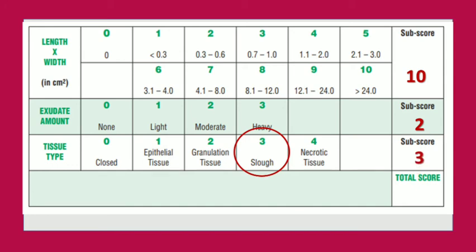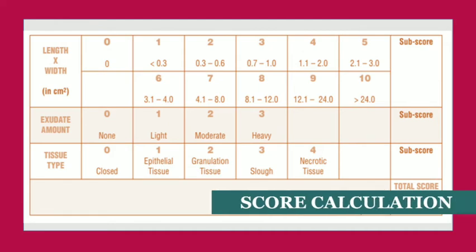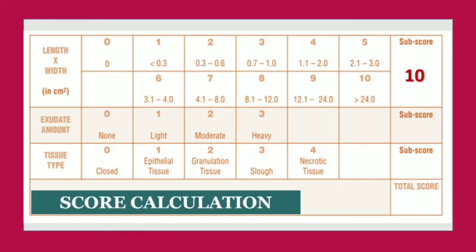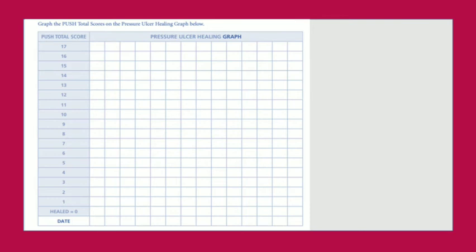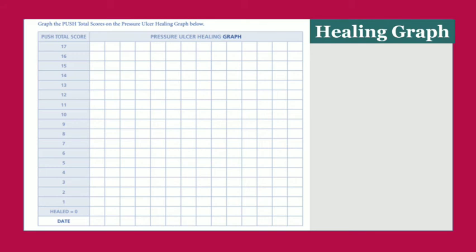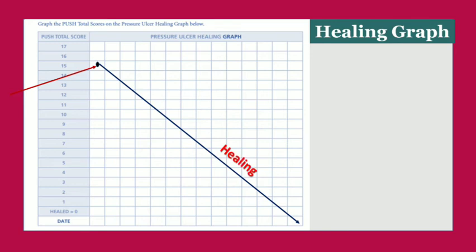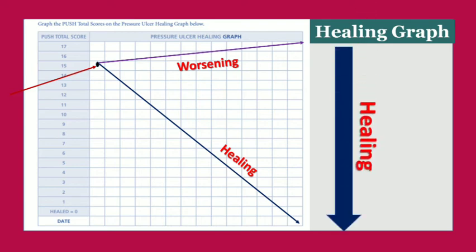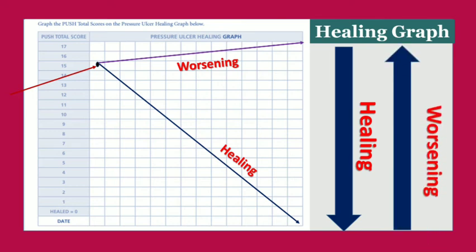The tissue type subscore is recorded as 3. For total score calculation: length × width scores 10, exudate amount scores 2, and tissue type scores 3, giving a total score of 15. The next step is the healing graph — mark the score of 15 daily on a graph sheet. If the score goes downward over time, healing is occurring; if the score increases, the pressure ulcer is worsening.